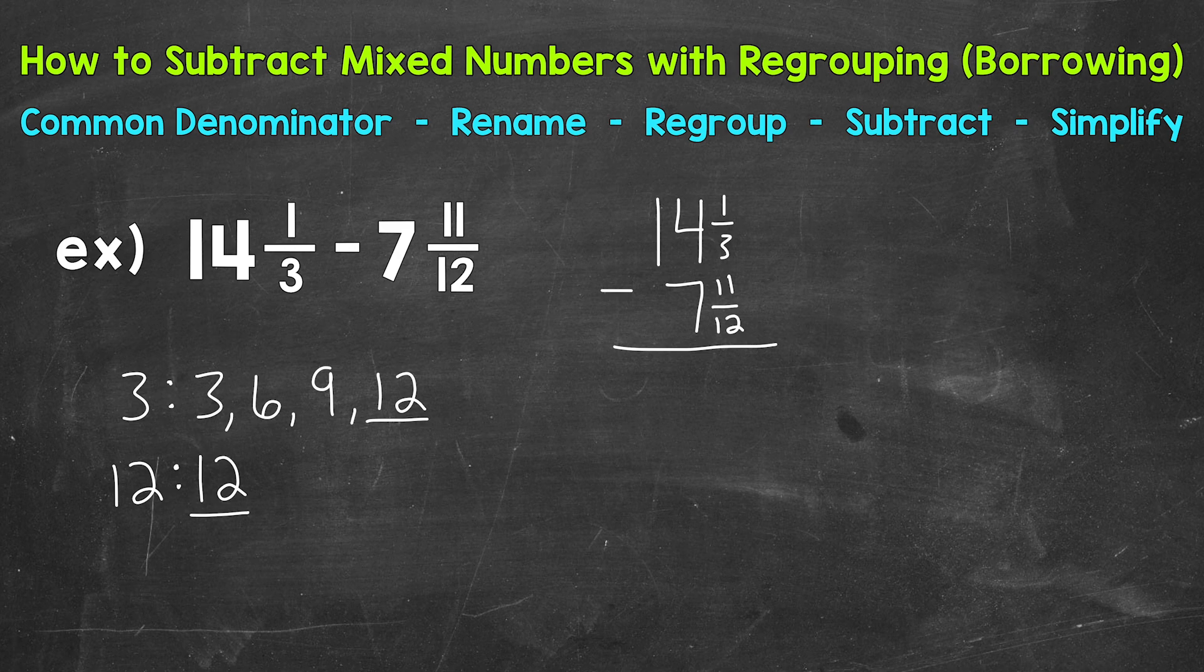So there's no need to extend that list. Once we find that least common multiple, that's going to be our least common denominator. So 12 is going to be our common denominator that we're going to use. Once we have that, we need to rename the fractional part of these mixed numbers with that common denominator.